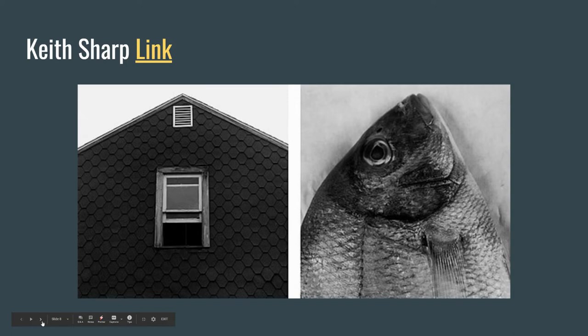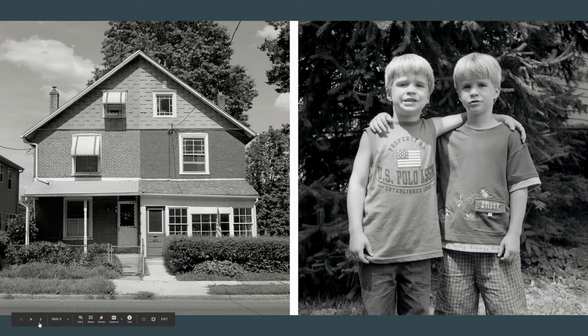Keys Sharp is really good at doing similarities. We have the shingles here and then the scales of the fish; we have the little point at the top of the fish just like the roof. Maybe as a viewer we notice the vent and the eye, the window and the gills or fin. Here we have a duplex and then we have twins. The duplex is two halves of a whole — and identical twins have the same DNA, so they're kind of two parts of one thing as well. It's only because these are put together that we start making those connections.